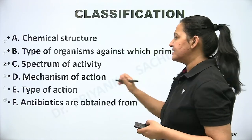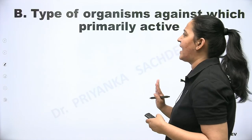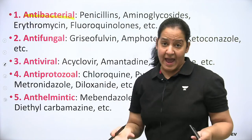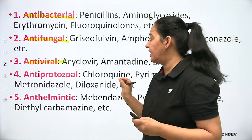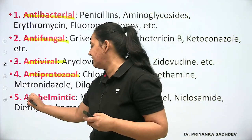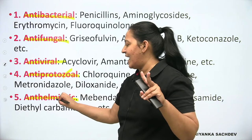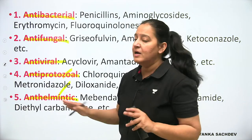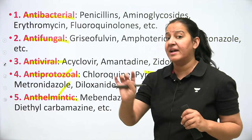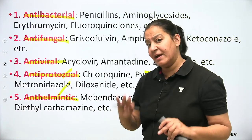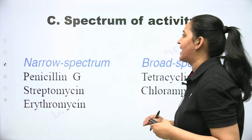The second classification is based on the type of organism against which the drug is active. If active against bacteria, it is antibacterial; against fungi, antifungal; against viruses, antiviral. Against parasites — which are of two types, protozoa and helminths — the drugs are antiprotozoal and antihelminthic, collectively called antiparasitic. So we have four broad categories: antibacterial, antiviral, antifungal, and antiparasitic.